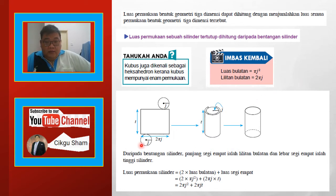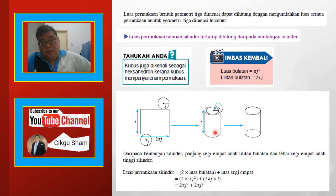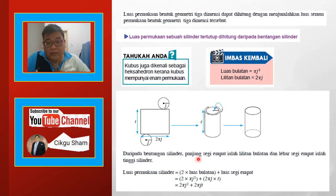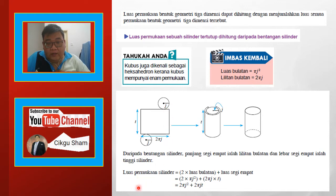Ini selinder. Ini bentangan dia — kita ada segi 4 kat sini dan kita ada 2 bulatan. Bila kita cantumkan kita akan dapat sebuah selinder. Daripada bentangan selinder, panjang segi 4 tepat ialah lilitan bulatan — segi 4 tepat ni bila kita jadikan dia sebuah selinder, dia adalah lilitan bulatan tu panjangnya. Jadi begitulah cara kita dapatkan formula luas permukaan selinder daripada gambar tu.